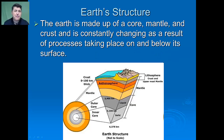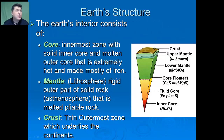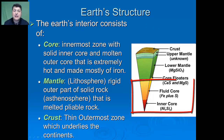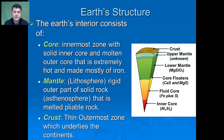The Earth is made up of a core, a mantle, and a crust, and is constantly changing as a result of the processes taking place on and below its surface. The core is the innermost zone, with a solid inner core made mostly of nickel and silicon, and a molten outer core that is extremely hot and made mostly of iron.